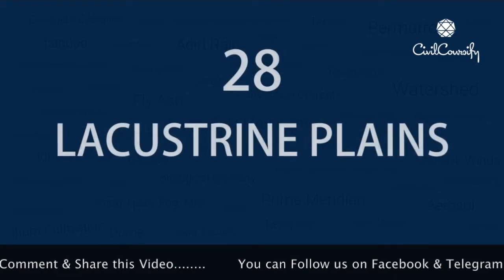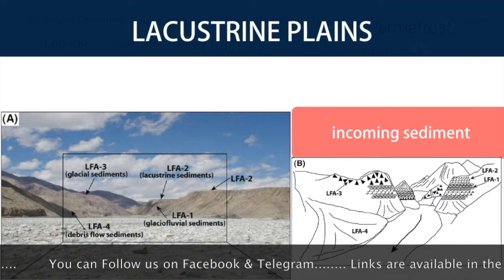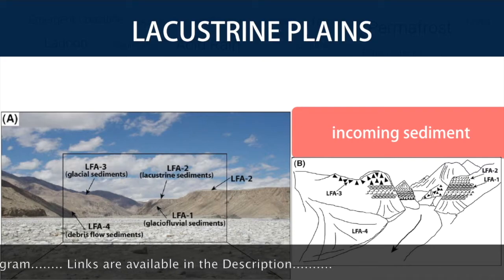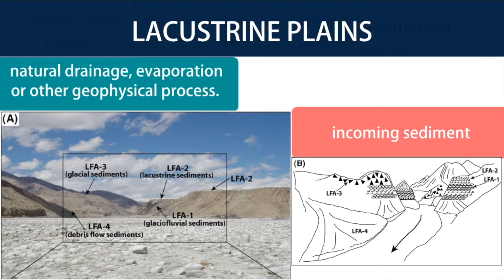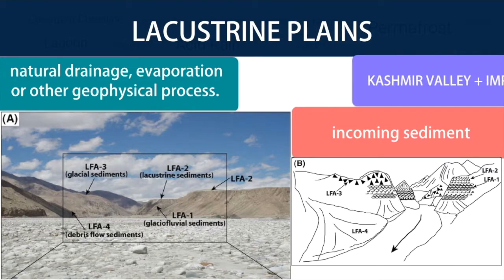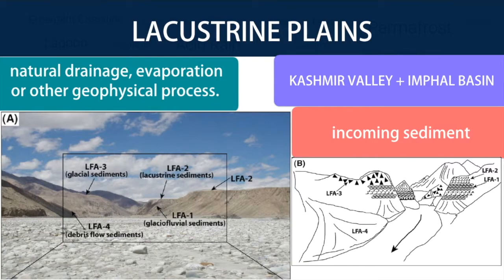Number 28: Lacustrine Plains. Lacustrine plains or lake plains are lakes that get filled by incoming sediment. Over time, the water may drain from the lake, leaving the deposited sediments behind. This can be caused by natural drainage, evaporation, or other geophysical processes. The soil of the plain left behind may constitute fertile and productive farmland due to the previous accumulation of lacustrine sediments. In other cases, it may become a wetland or a desert. Examples of lacustrine plains in India are the Kashmir Valley and the Imphal Basin in the Manipur Hills.